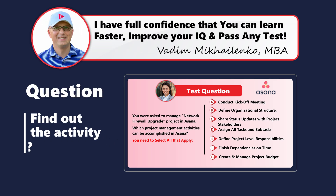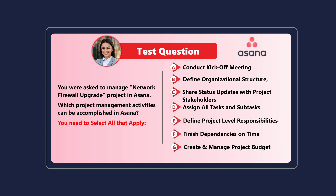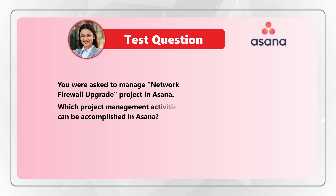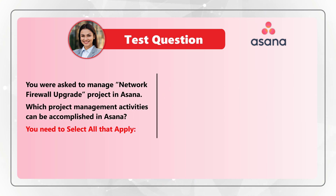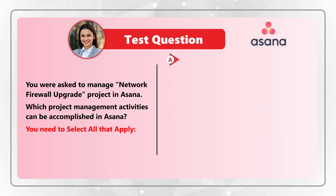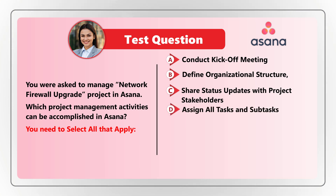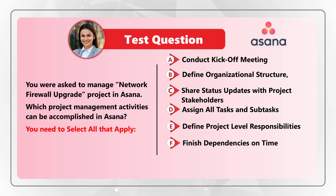Here's a tricky question we frequently see on the test. You were asked to manage a network firewall upgrade project in Asana. Which project management activities can be accomplished using the Asana tool? Select all that apply. Choice A: Conduct kickoff meeting. Choice B: Define organizational structure. Choice C: Share status updates with project stakeholders. Choice D: Assign all tasks and subtasks. Choice E: Define project level responsibilities. Choice F: Finish dependencies on time. Choice G: Create and manage project budget.